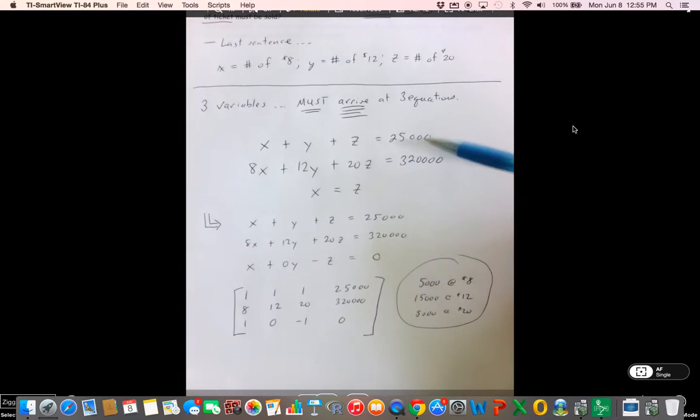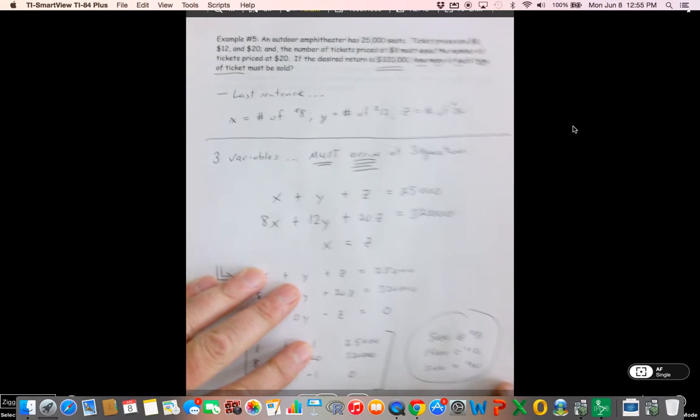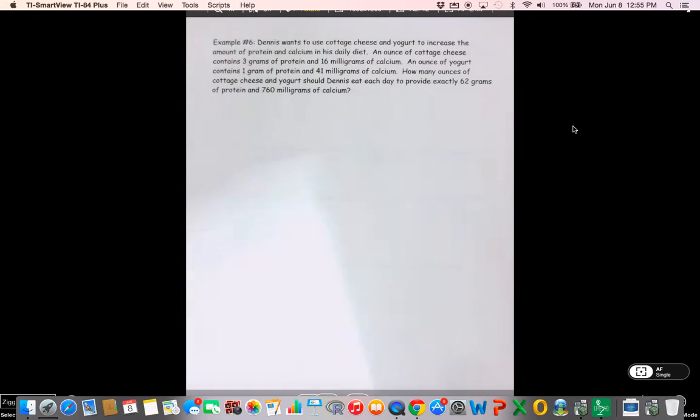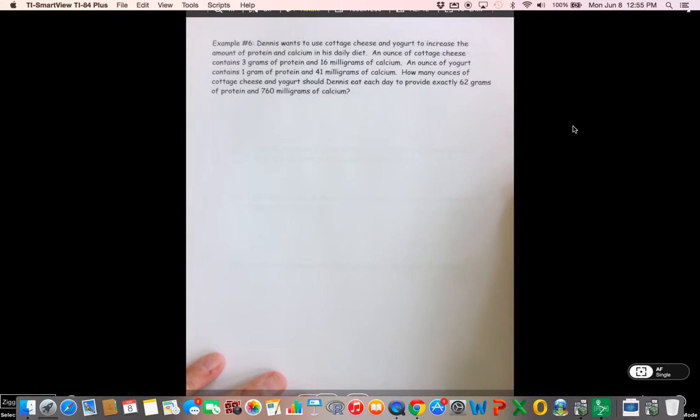Alright, so you can see that I've done the solution right here from the output on the calculator and it works out right. Alright, we need everything to add up to 25,000. So 5,000 plus 15,000 plus 5,000 is 25,000. We need the number of $8 tickets to be the same as the number of $20 tickets, which we do, 5,000 each. And you can go ahead and multiply this out. You can go 8 times 5,000, 12 times 15,000, and 20 times 5,000 and you'll see you get $320,000 as the total revenue. Alright, I don't care what you say, that is the easiest way to do that problem.